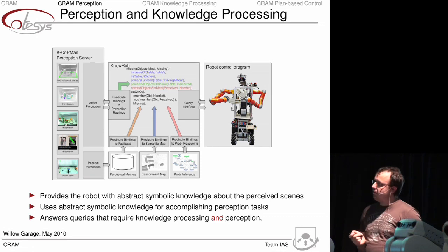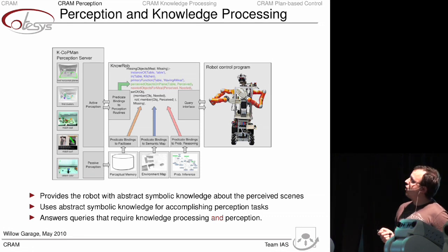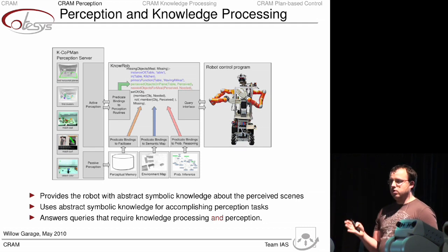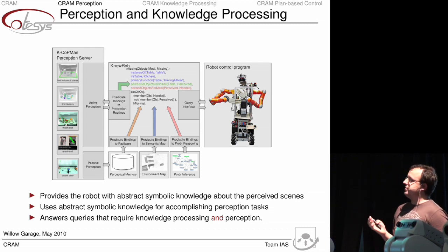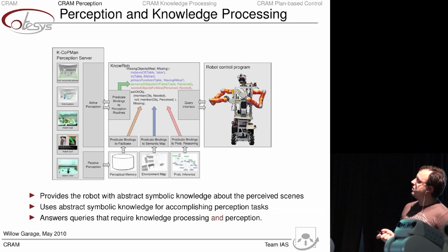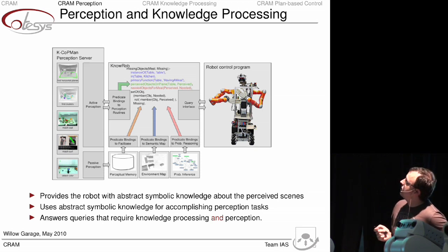Furthermore, we have also developed a system that we call K.COPMAN, which stands for Knowledge Enabled Perception System. It actually works in two manners: it has an active perception and a passive perception. Active perception basically means we instruct the robot to go look for the object of a certain type, and the robot spins around until it finds it. The passive perception module basically maps the environment while the robot is active and then enables the logical queries shown on the previous slide.